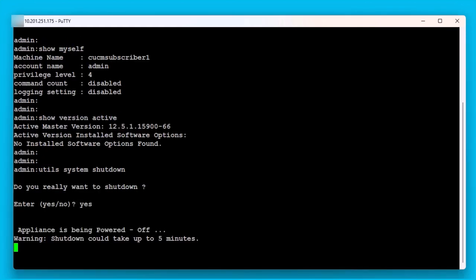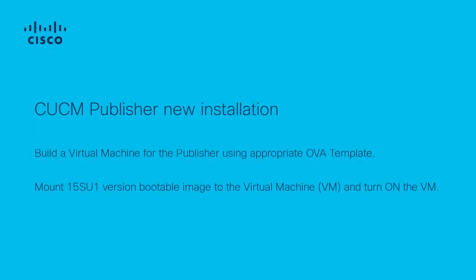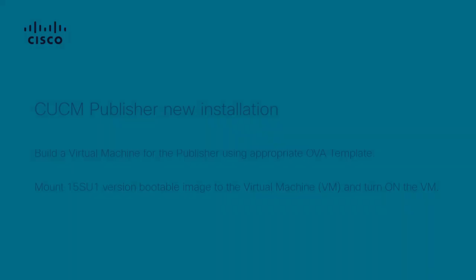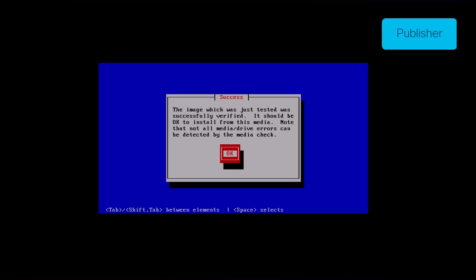The following steps will show you how to import the exported data into a newly built 15su1 CUCM cluster. Build a virtual machine for the publisher using the appropriate OVA template. Mount the 15su1 version bootable image to the virtual machine and turn on the VM. Press the ok button after the media check is successful.